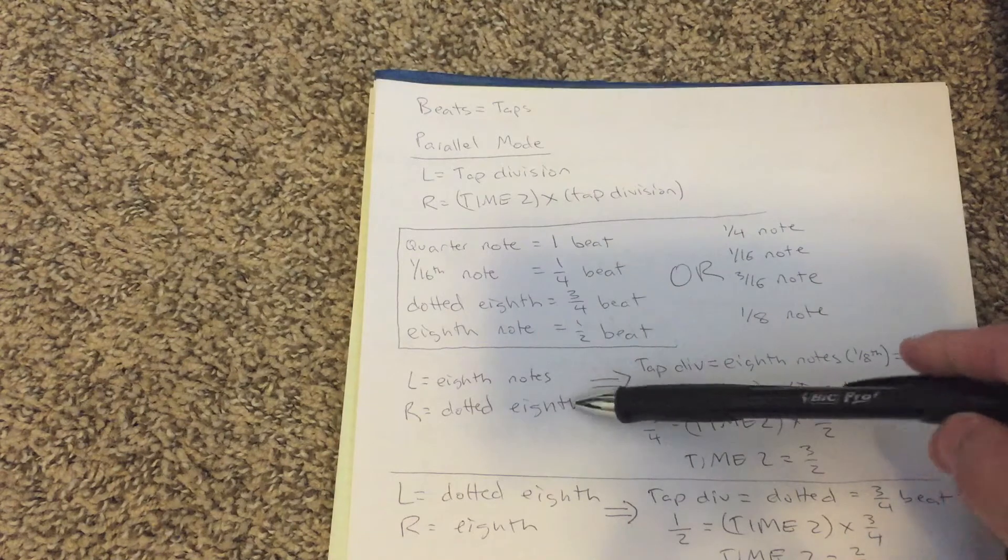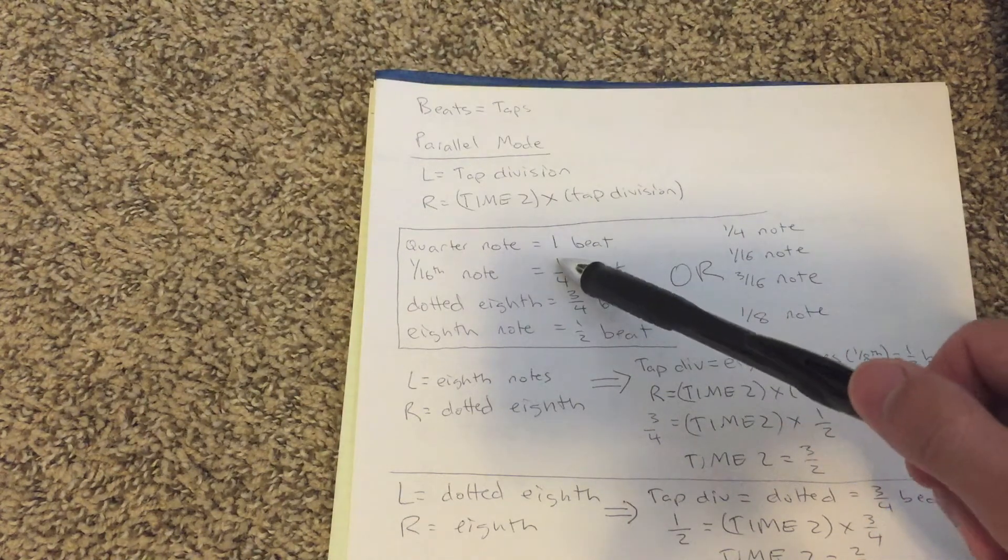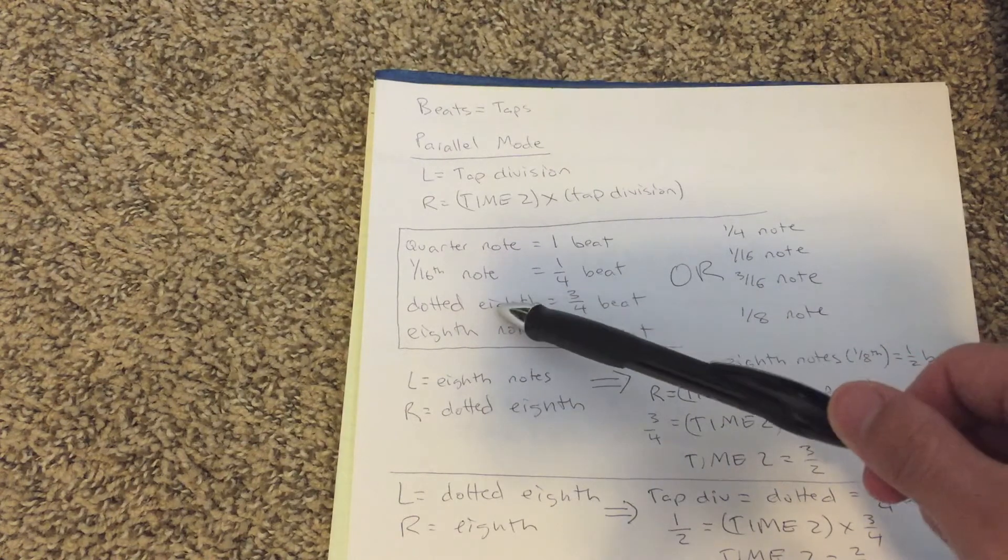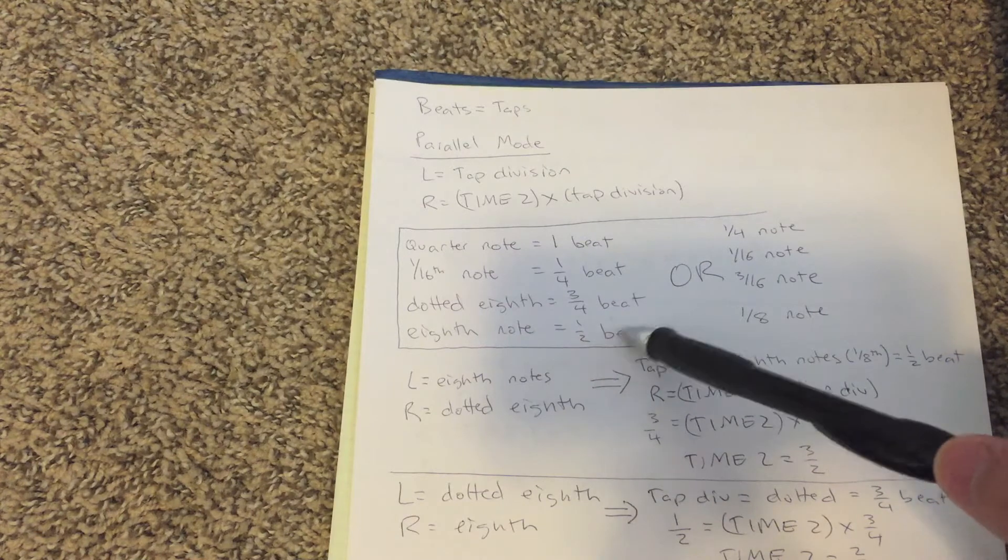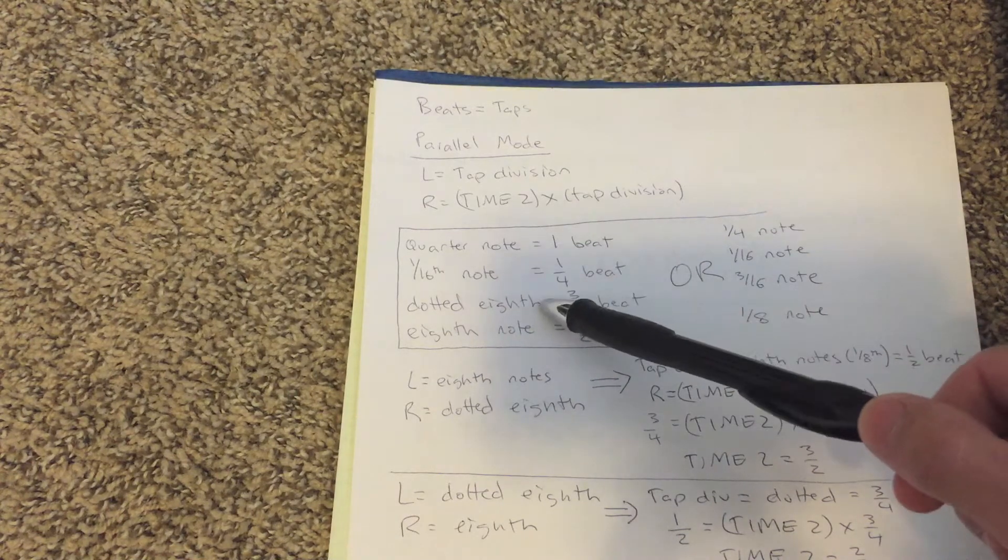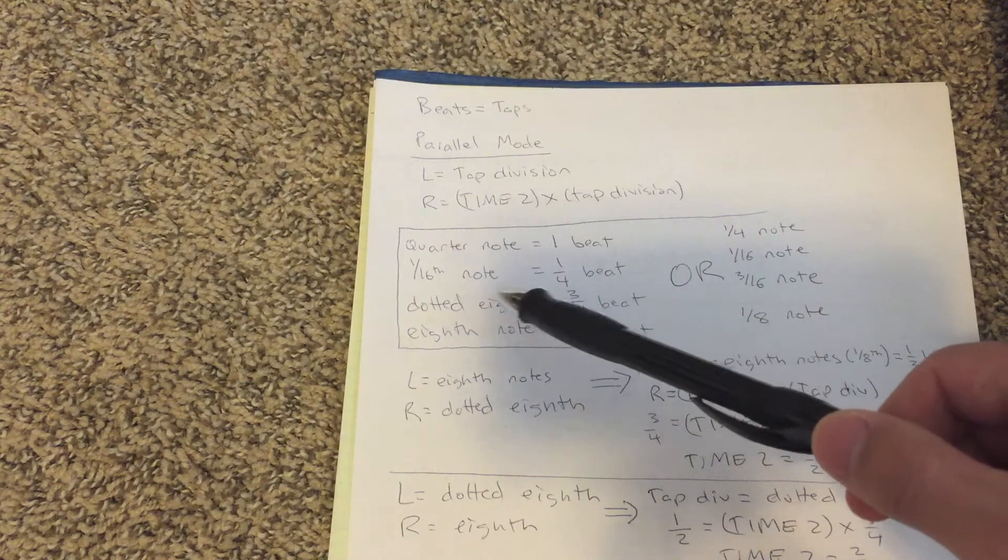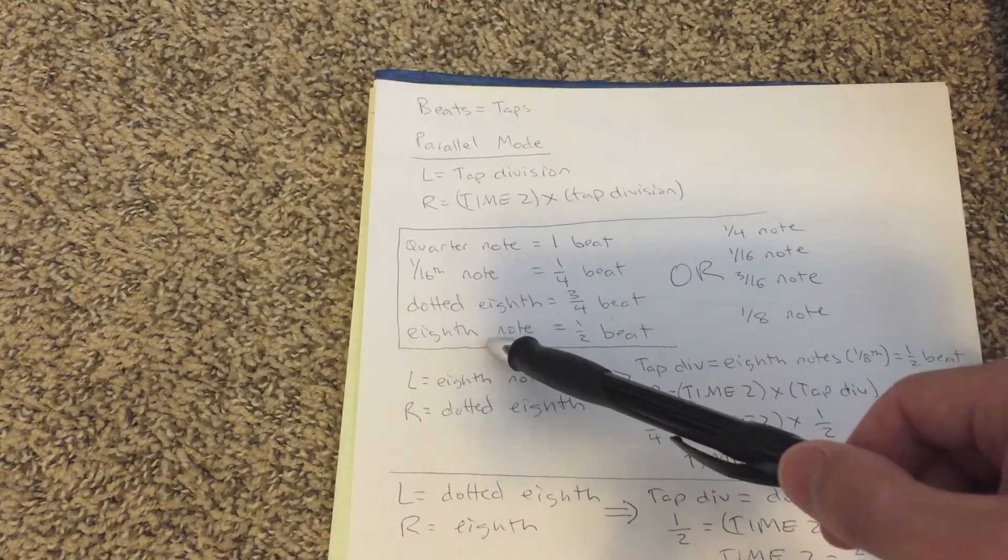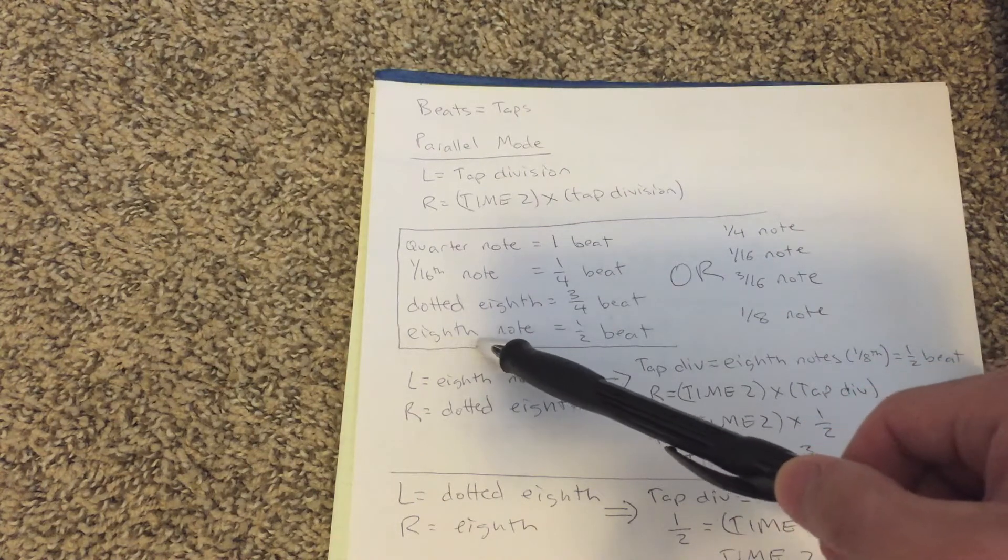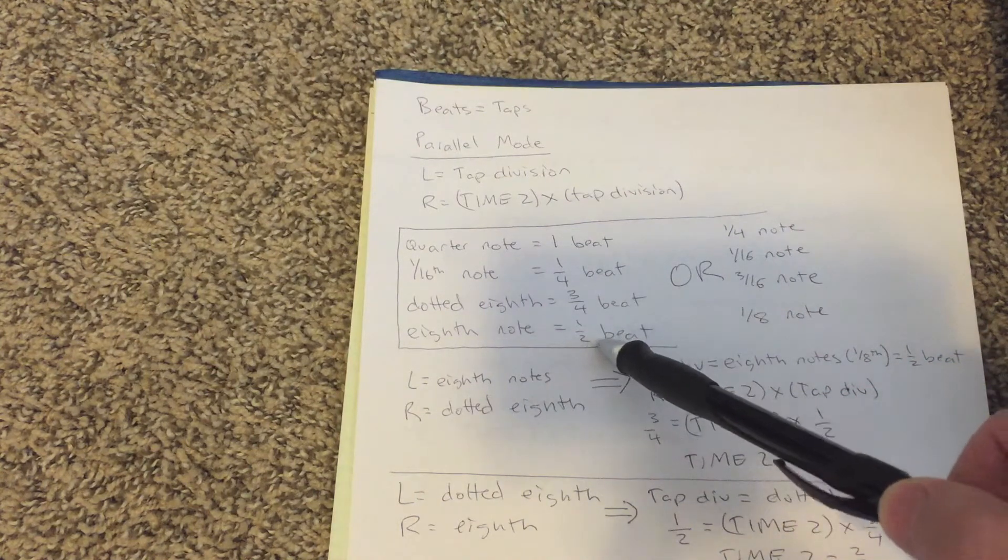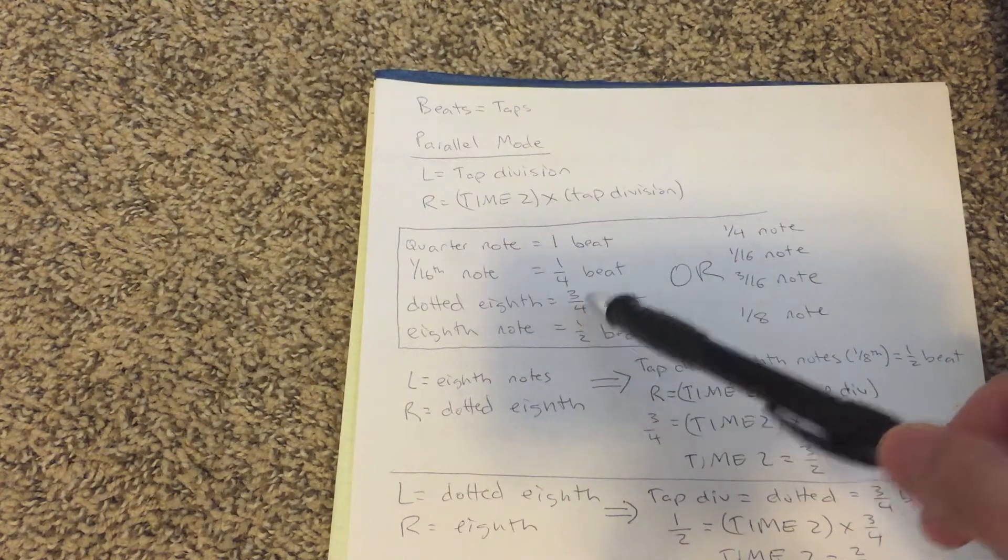So here's just a chart. Basically a quarter note is one beat. Sixteenth note is a quarter beat. Dotted eighth note is three quarters of a beat and an eighth note is half a beat. So it's important to know what a dotted eighth note is. Anytime you dot a note, that means you take that note plus half its value. So a dotted eighth note is an eighth note, half a beat, plus half of that beat, so a quarter. One half plus a quarter is three fourths.